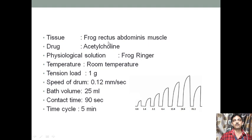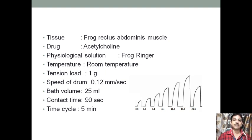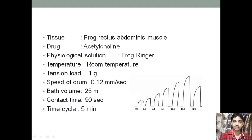Further parameters: tension load — 1 gram; speed of the drum — 0.12 mm per second, which we need to fix; bath volume — in the student organ bath, it is approximately 20 to 25 ml, but it should be the same for every response. Contact time means the period during which you inject the drug and the drum is rotating — the tissue produces contraction and the frontal lever goes up. This contact time is 90 seconds.